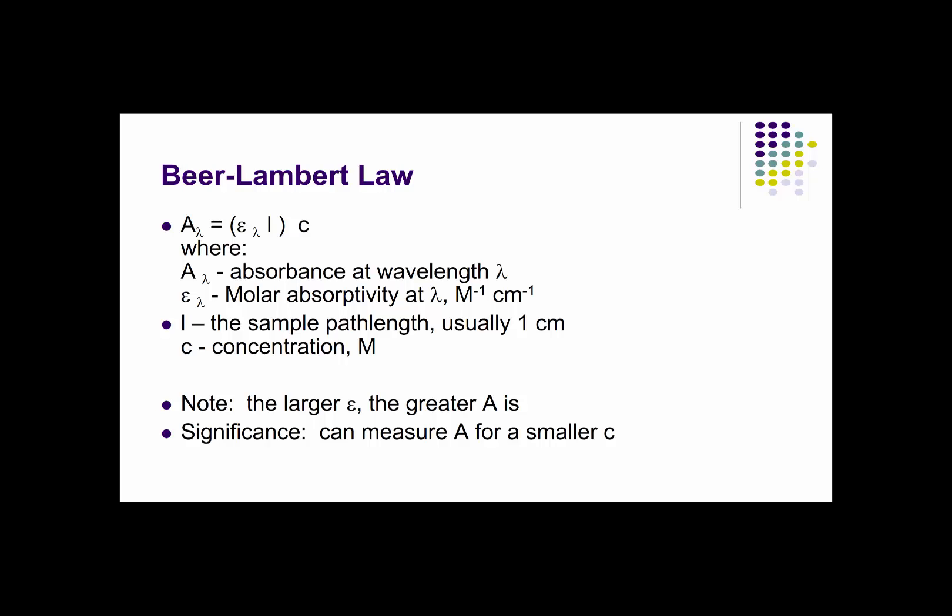We'll talk more about molar absorptivity in a future podcast. Suffice it for now that you should view this as a constant, the value of which is related to the electronic structure of your analyte and the molar absorptivity for good chromophores—I'll introduce that term now—or functional groups that absorb light is typically very large. The larger the value that epsilon assumes, then the lower the concentration of an analyte we can measure.